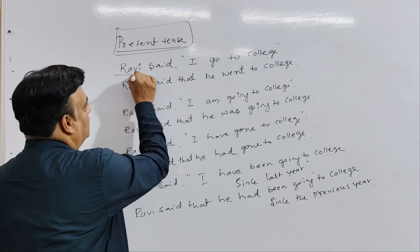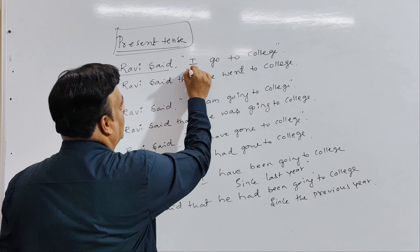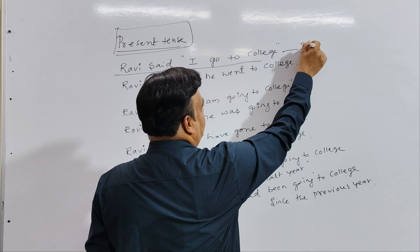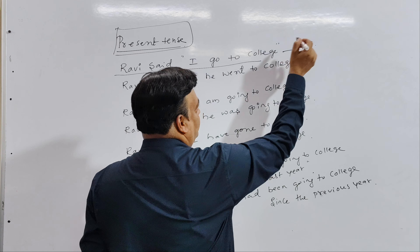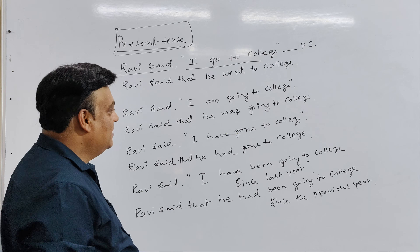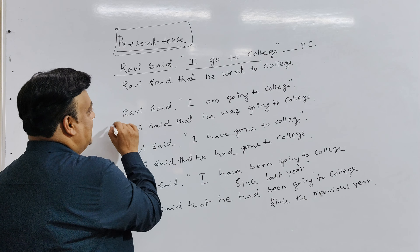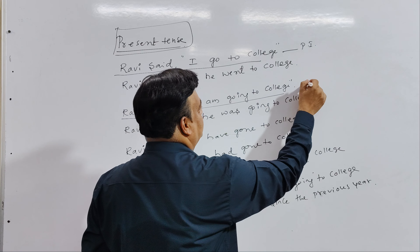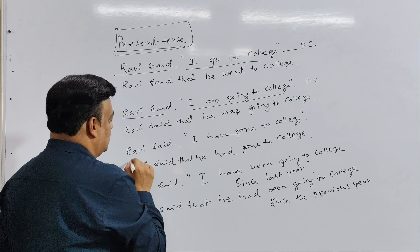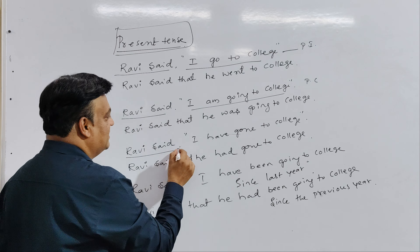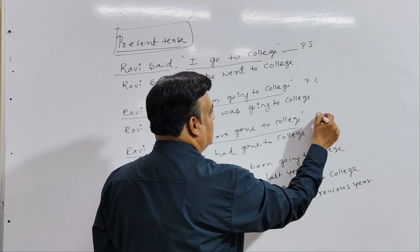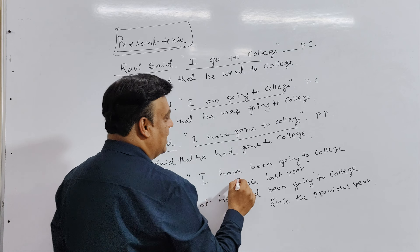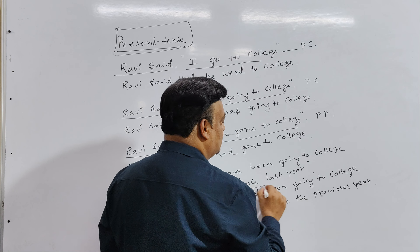First example: Ravi said, 'I go to college.' This is present indefinite. Second: Ravi said, 'I am going to college.' This is present continuous tense. Third example: Ravi said, 'I have gone to college.' This is present perfect tense. Fourth: Ravi said, 'I have been going to college since last year.'